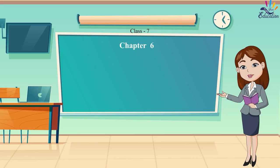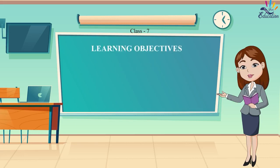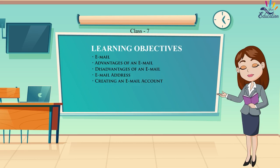Chapter 6: Electronic Mail. Learning Objectives: Email, Advantages of an Email, Disadvantages of an Email, Email Address, Creating an Email Account, Components of an Email Window, Attaching Files to an Email, and Blogging.